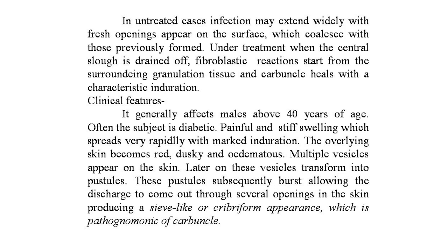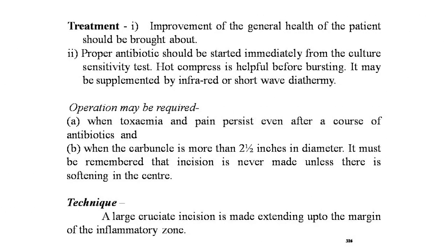Clinical features of carbuncle: it generally affects males above 40 years of age; the subject is often diabetic. There is a painful and stiff swelling which spreads very rapidly with marked induration. The overlying skin becomes red, dusky, and edematous. Multiple vesicles appear on the skin, later transforming into pustules, which subsequently burst, allowing discharge through several openings — producing a sieve-like or cribriform appearance, which is pathognomonic of carbuncle. Treatment: improvement of the patient's general health; appropriate antibiotics started immediately from culture and sensitivity testing. Hot compresses are helpful before bursting, supplemented by infrared or shortwave diathermy. Operation is required when toxemia and pain persist after a course of antibiotics and when the carbuncle is more than two-and-a-half inches in diameter. Incision is never made unless there is softening in the center; a large cruciate incision is made extending to the margins of the inflammatory zone.